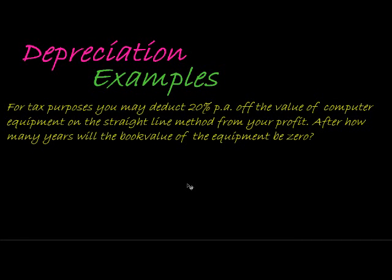Now, let's have a look at some basic examples with depreciation. Here, for tax purposes, you may deduct 20% per annum off the value of computer equipment on the straight-line method from your profit. Okay, so that means when you buy computer equipment, you can't book it out as an expense when you're doing your accounting.